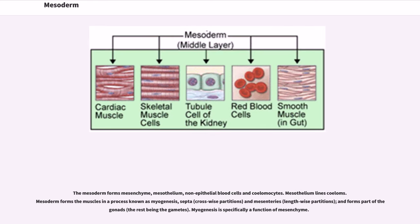The mesoderm forms mesenchyme, mesothelium, non-epithelial blood cells and coelomocytes. Mesothelium lines coeloms. Mesoderm forms the muscles in a process known as myogenesis, septa and mesenteries, and forms part of the gonads.